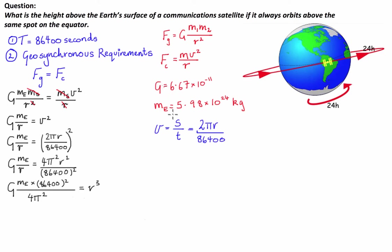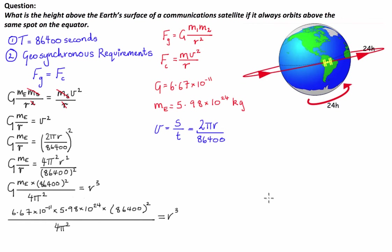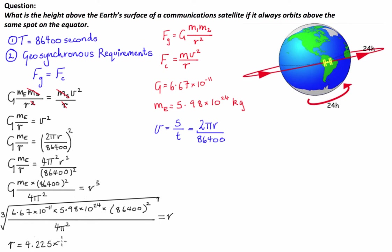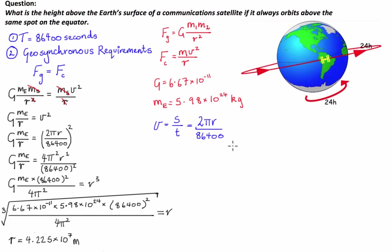I can then input the values for the universal gravitational constant and the mass of the Earth. To find the distance between the two centres of mass, I take the cube root of both sides, leaving simply the radius on the right. The distance R between the two objects' centres of mass comes out to 4.225 times 10 to the power of 7 meters. One of the biggest mistakes students make is leaving their solution as this value.